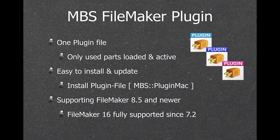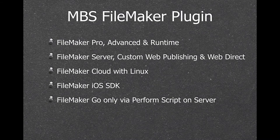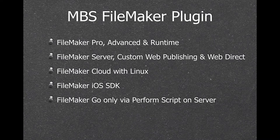We support FileMaker 8.5 and newer on Mac and FileMaker 7 to 17 on Windows. FileMaker 16 is supported since plugin version 7.2 and FileMaker 17 since 8.2. The MBS FileMaker plugin can be used on all FileMaker targets. With FileMaker Pro, Advanced and Runtime you install the Mac or Windows plugin. For FileMaker Server with WebDirect you install the plugin on the server. For FileMaker Cloud we have a Linux version of the plugin. We even have a FileMaker plugin for iOS so you can use it with the iOS SDK.